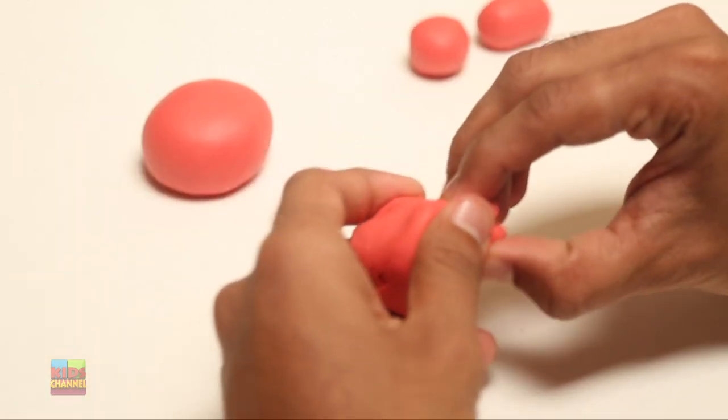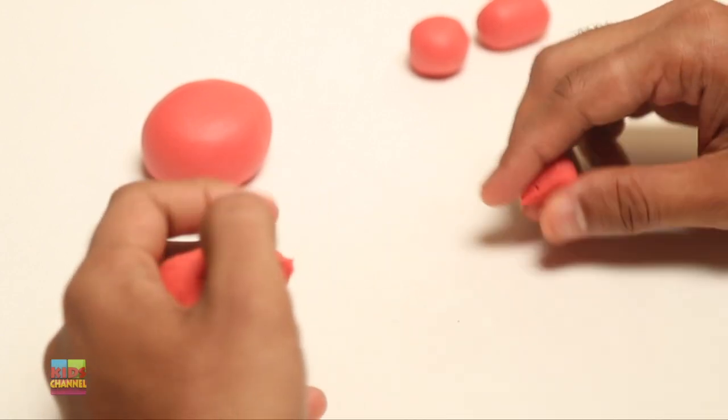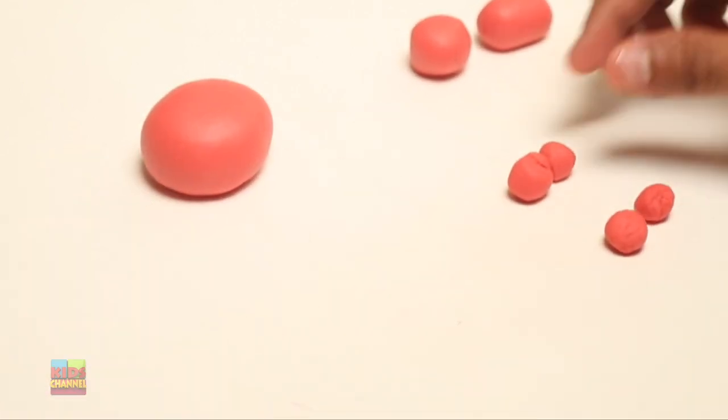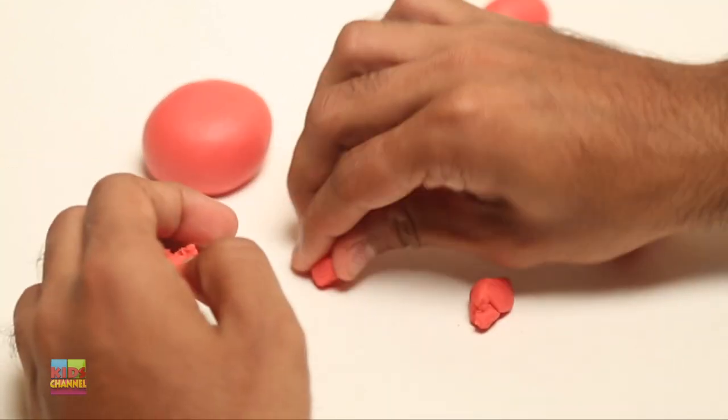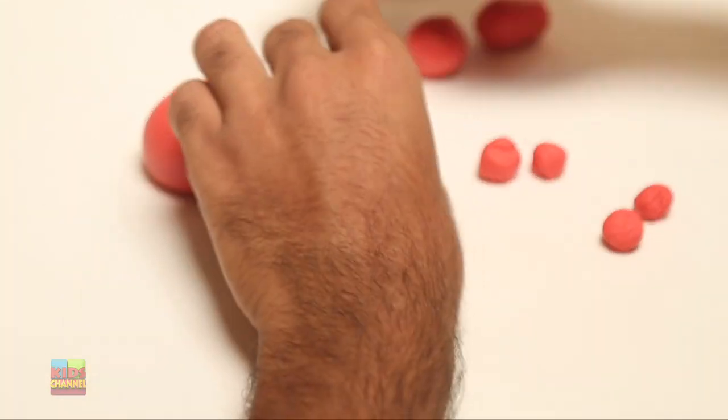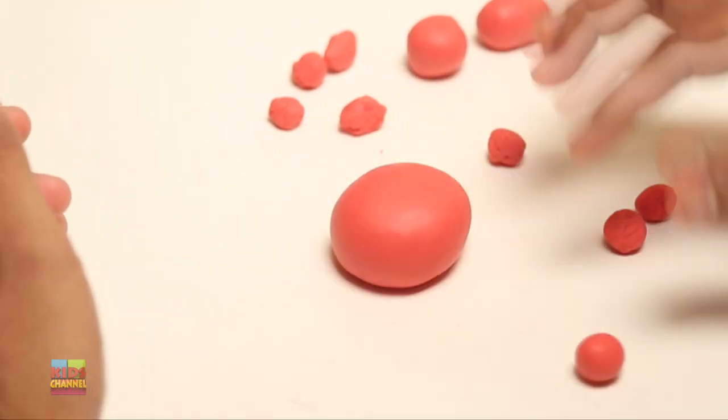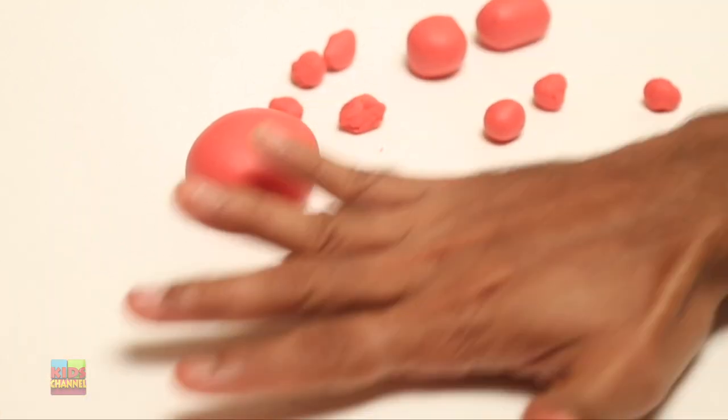And now we're going to make eight small balls. So take out an even smaller amount of Play-Doh. Start rolling it into a ball. Make it a circular motion so it's nice and round. And when you're done, just put it aside.